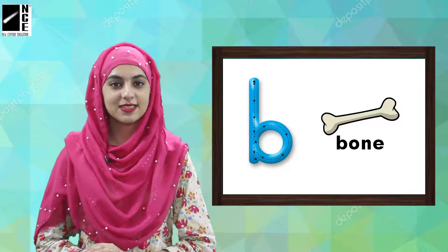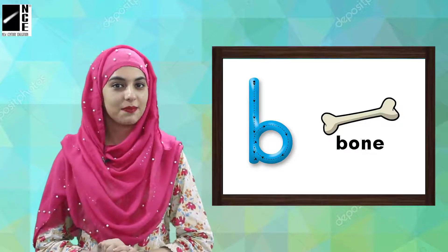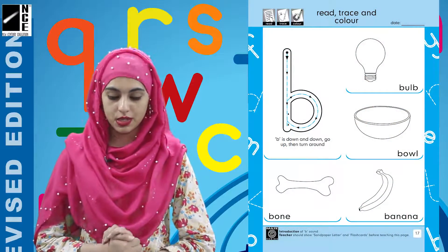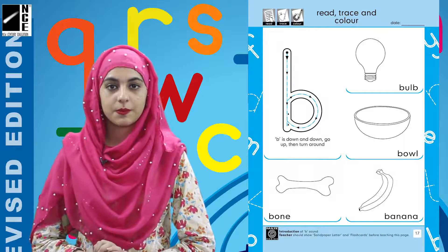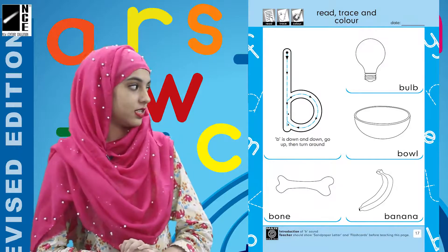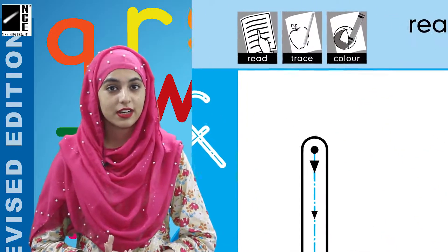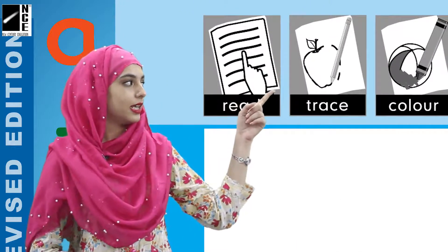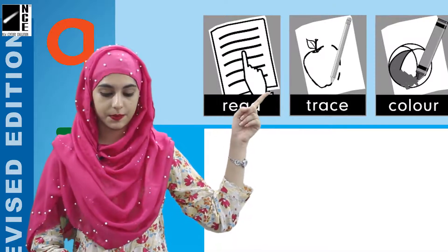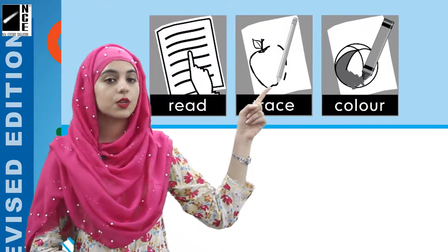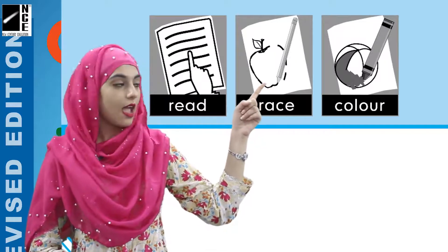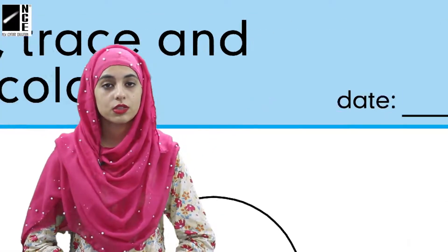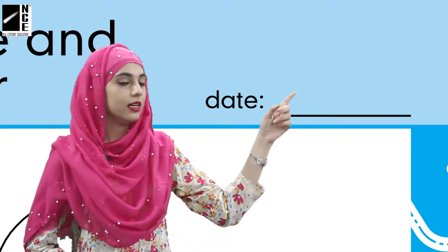Very good! Excellent — I am really enjoying it with you. Now what you have to do? All of you, open your word book to page number 17. On page number 17 we have the same thing. First of all, read the icons with me: the first one is read, the second one is trace, and the last one is color. So write down the date first.